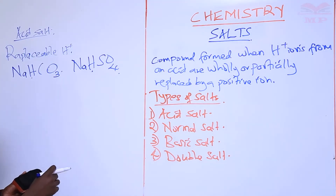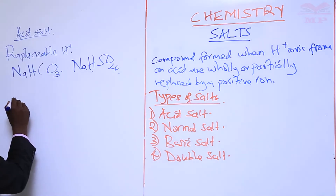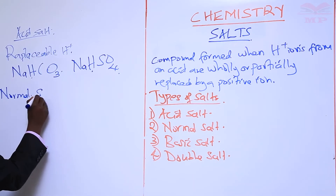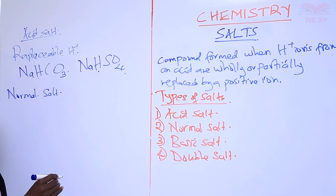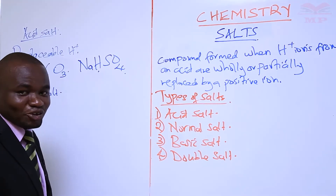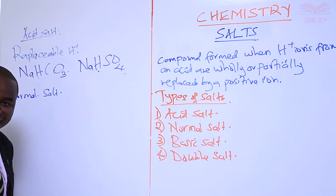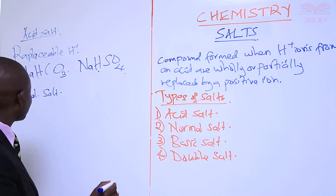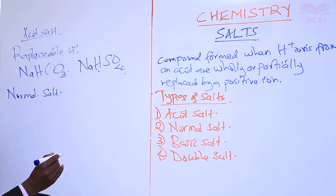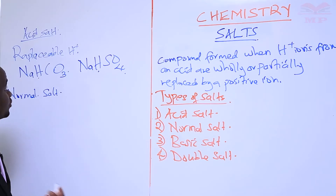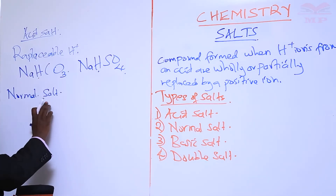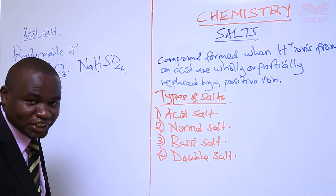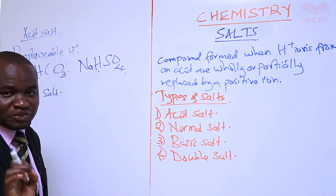The second type of salt is called a normal salt. The definition of a normal salt can be obtained from the definition of an acid salt. These salts do not contain a replaceable hydrogen ion.